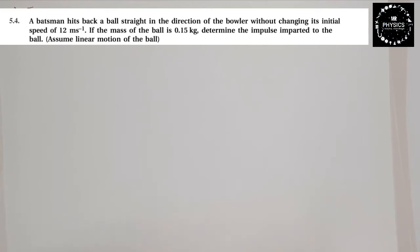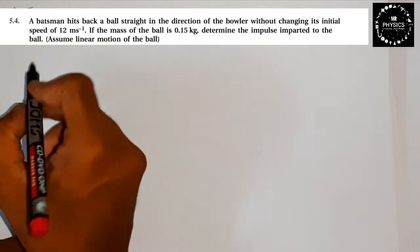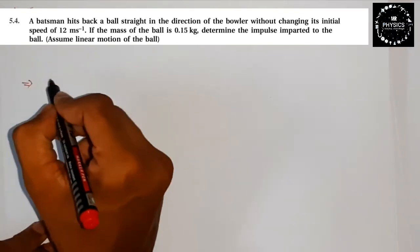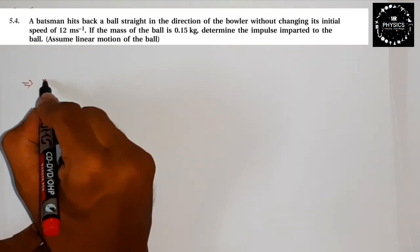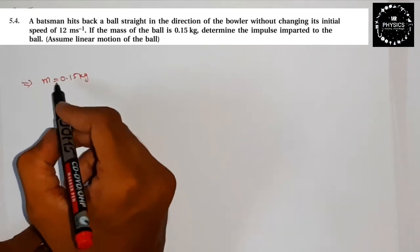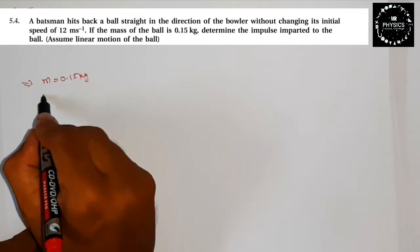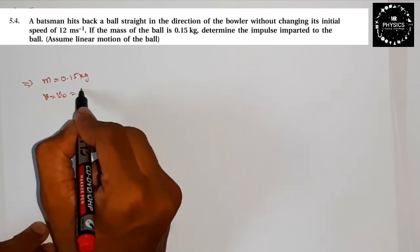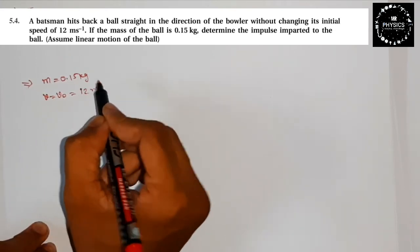Assume linear motion of the ball. Let's write the values: the mass of the ball is 0.15 kg, and the initial and final speeds v and v0 are equal to 12 meters per second.